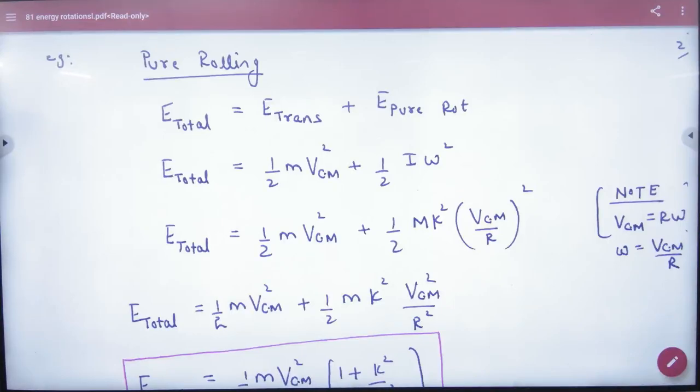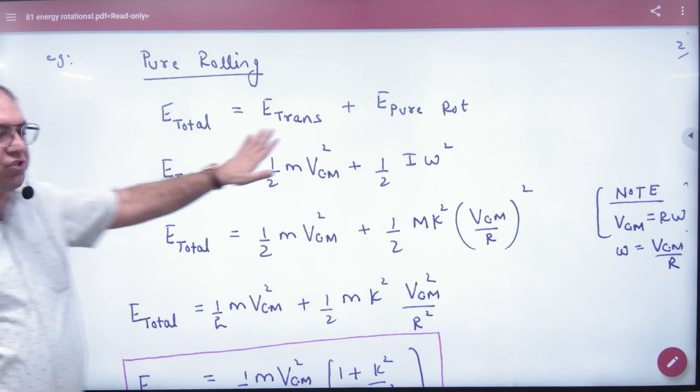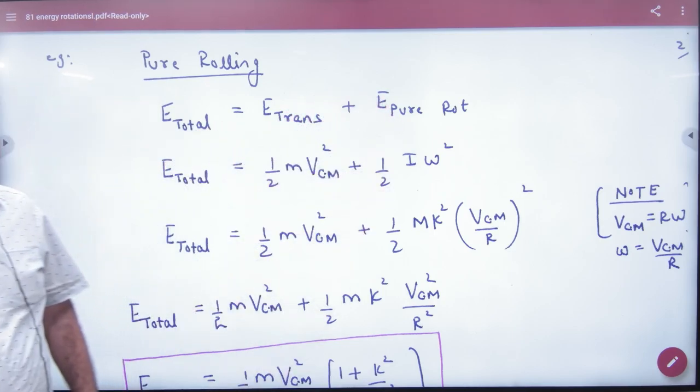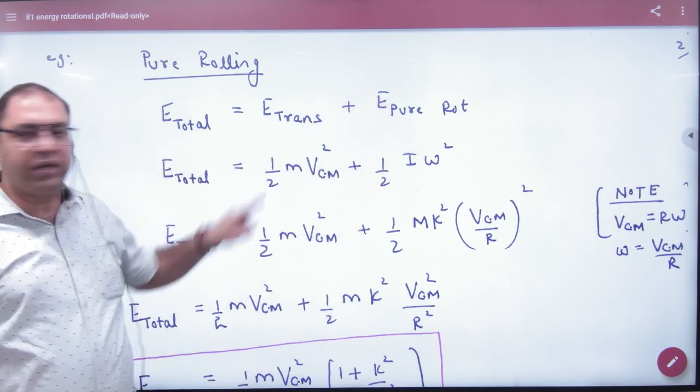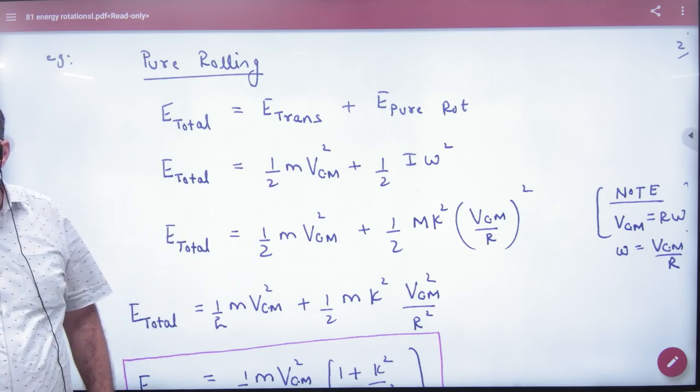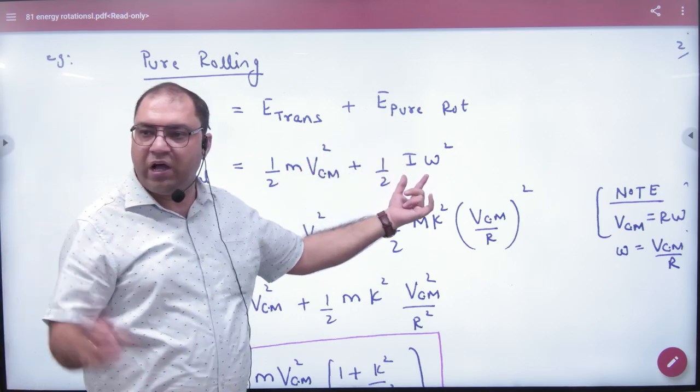In pure rolling, total energy when a body rolls is the sum of translational and rotational energy. The translational energy is half m v center of mass squared, and the pure rotational energy is half I omega squared.